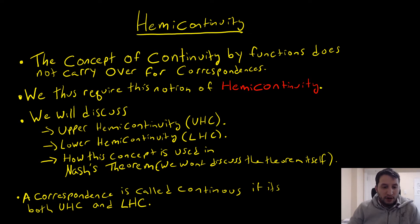We'll discuss upper hemicontinuity, which we'll denote by UHC, lower hemicontinuity, which we'll denote by LHC, and we'll also discuss how these ideas are related to Nash's theorem. A correspondence is called continuous if it is both upper hemicontinuous and lower hemicontinuous.